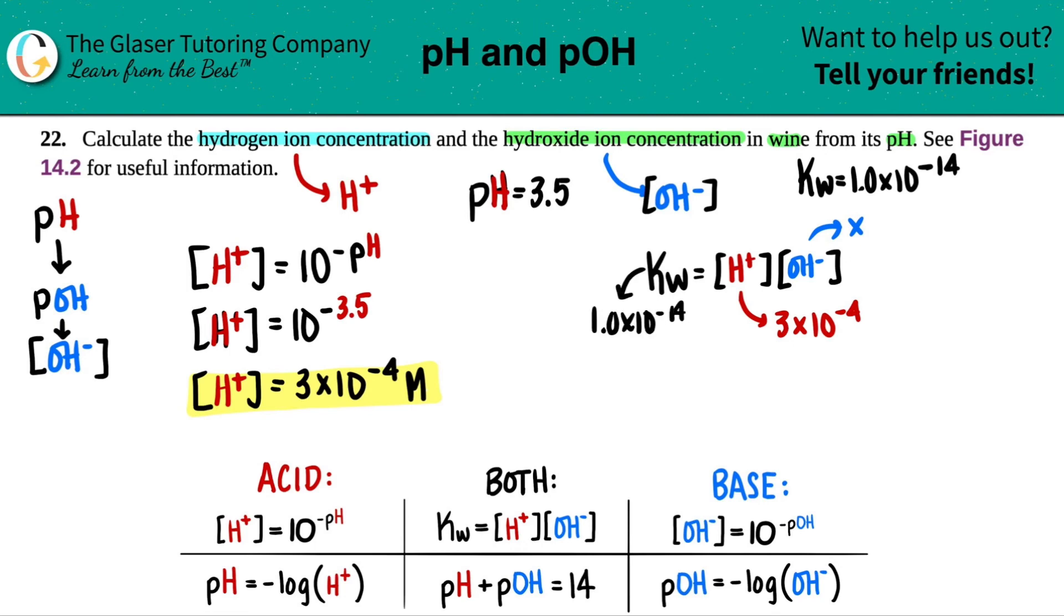And now we know what that Kw is. So let's go for it. 1.0 times 10 to the negative 14th equals 3 times 10 to the negative 4th times X.